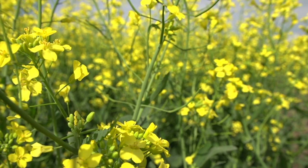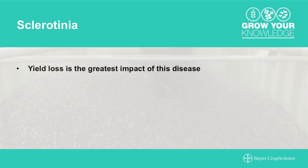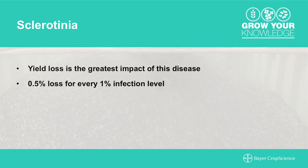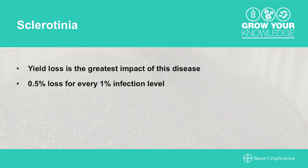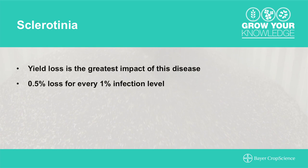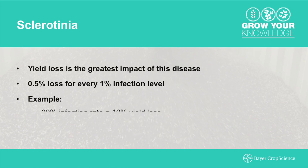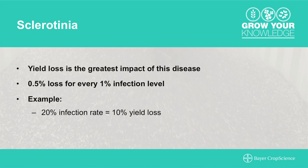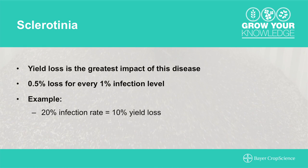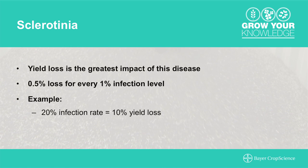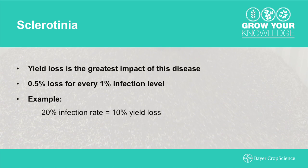Sclerotinia is the most serious disease that you'll find in canola. The biggest impact is going to be yield loss. Pretty much every 1% of infection that you have, you'll lose approximately 0.5% in yield. So for example, if you had 20% infection in your field, you'd be looking at around a 10% yield loss, and yield loss is definitely going to affect your bottom line the most.